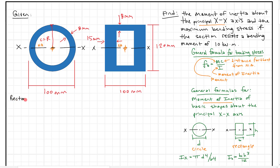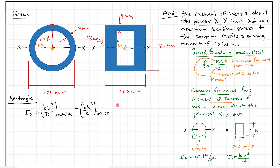For the rectangle, we'll do the same process. First find the moment of inertia: IX = BH³/12 for the outside, minus BH³/12 for the inside. We subtract off all the area on the inside of the hollow section to get the total moment of inertia. Our outer base is 100 mm and outer height is 120 mm.